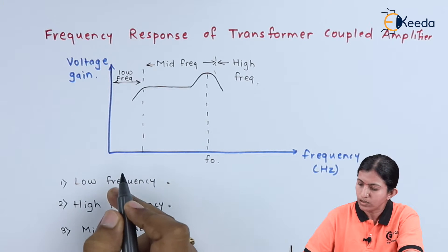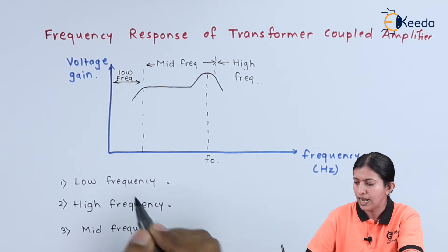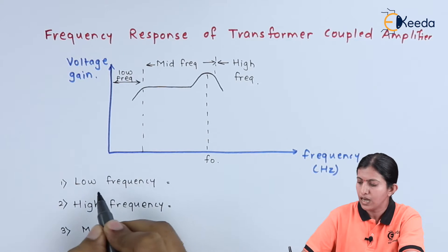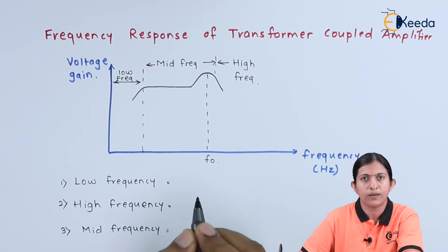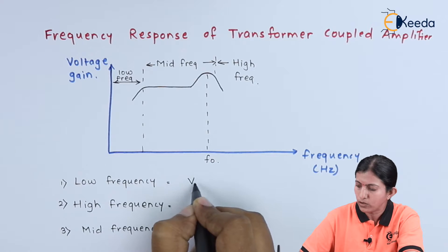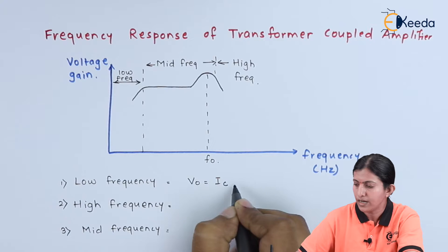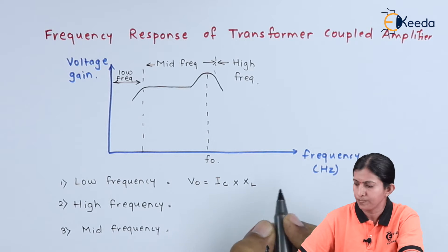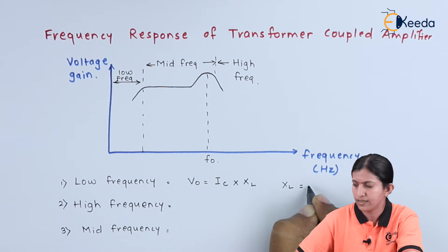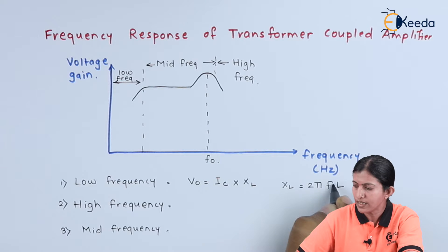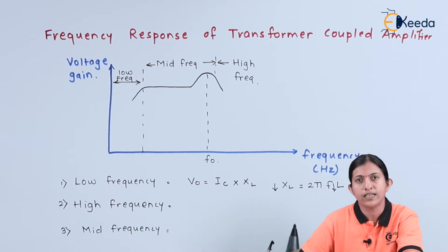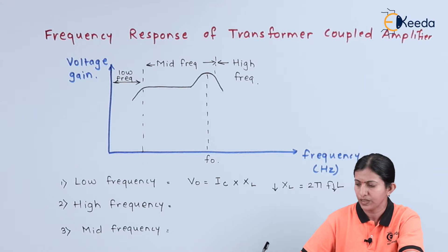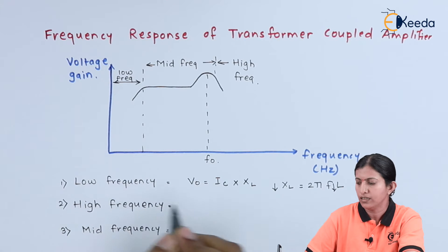At low frequency, the voltage gain decreases because the output voltage is taken across the primary winding, which is calculated as the product of collector current and inductive reactance. Inductive reactance is given as XL = 2πFL. As the frequency is less, the value of XL is also less, meaning there is less voltage drop across the primary winding of transformers T1 and T2. Because of that, at low frequency, the voltage gain decreases.